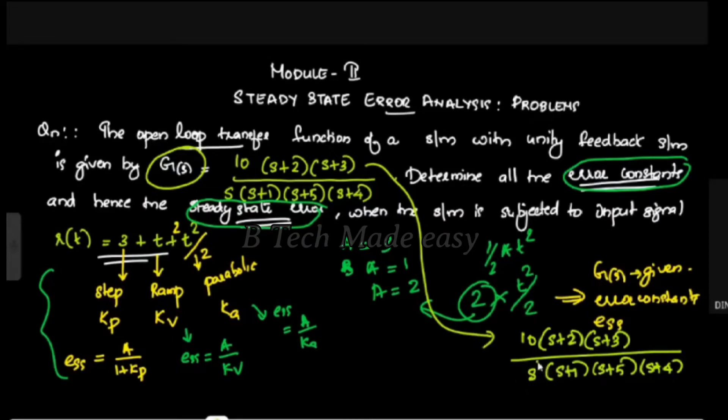We have n = 1 pole at the origin (s = 0) in the denominator, so this corresponds to a Type 1 system. Therefore, this is a Type 1 system.